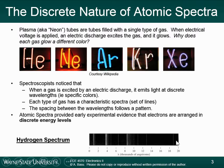This picture from Wikipedia shows examples of signs containing helium, neon, argon, krypton, and xenon. You can see that they all glow different colors. This is one of the early results that spectroscopists noticed, and it ultimately helped explain the discrete nature — the discrete energy levels — that atoms have.